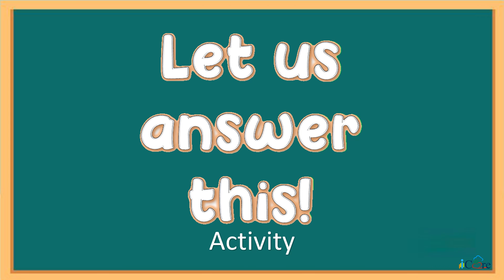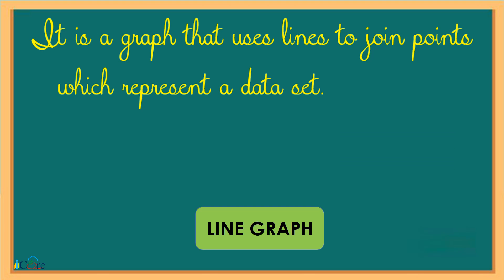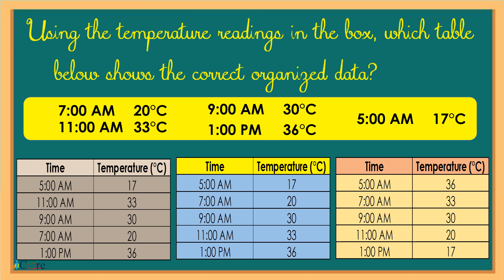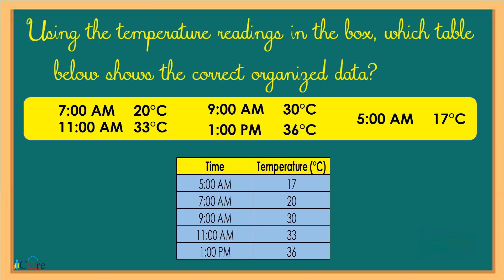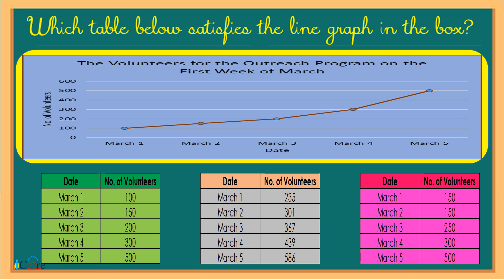Let us answer this. It is a graph that uses lines to join points which represent a data set. Using the temperature readings in the box, which table below shows the correctly organized data? Which graph below correctly represents the data in the box? Which table below satisfies the line graph in the box?